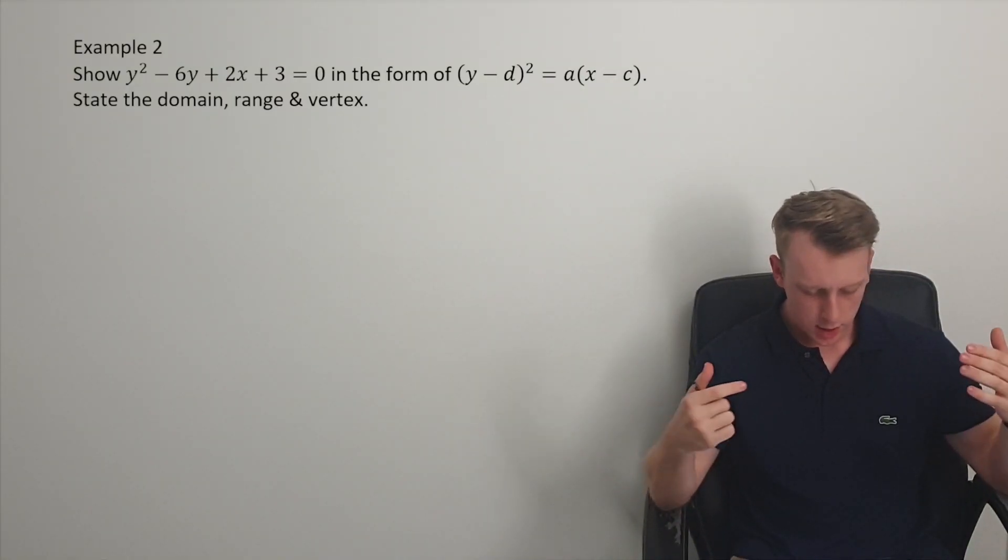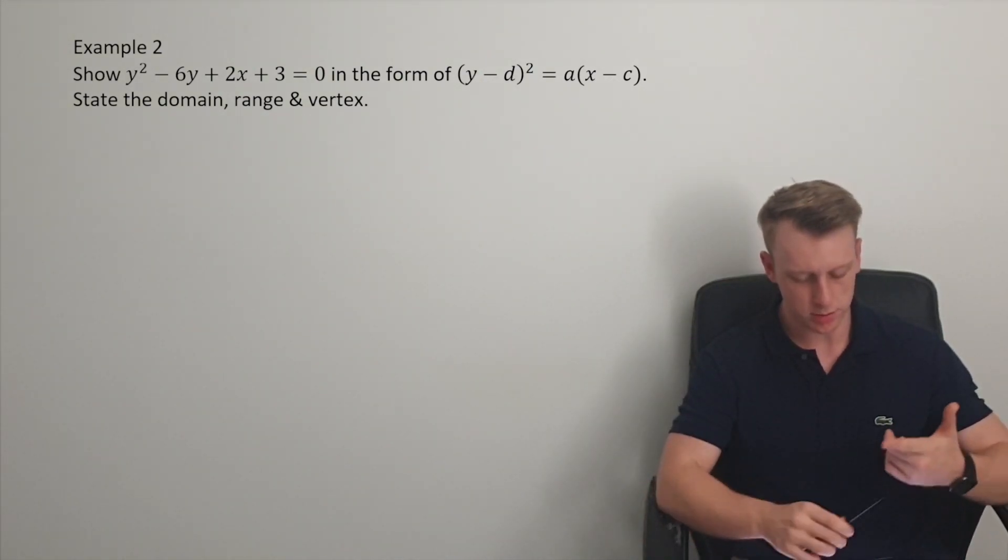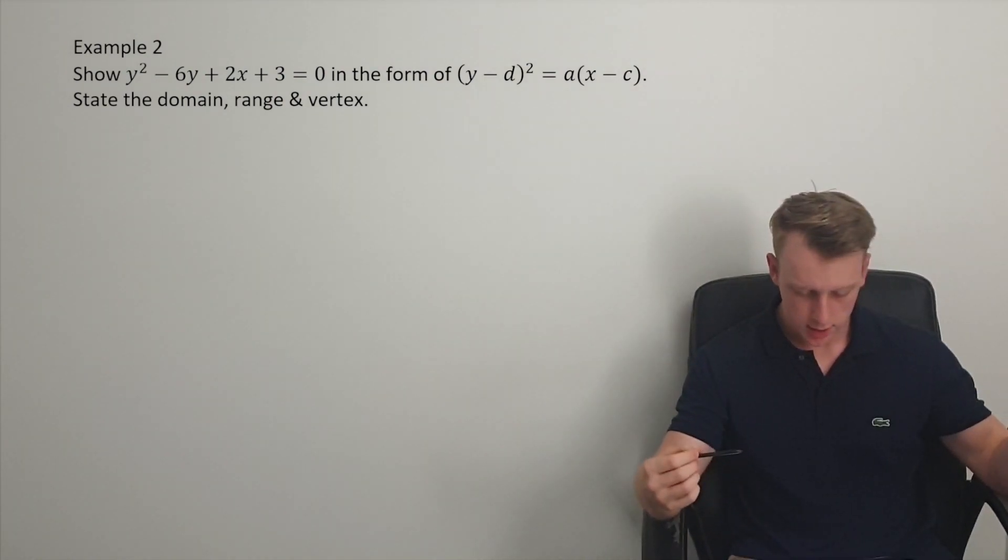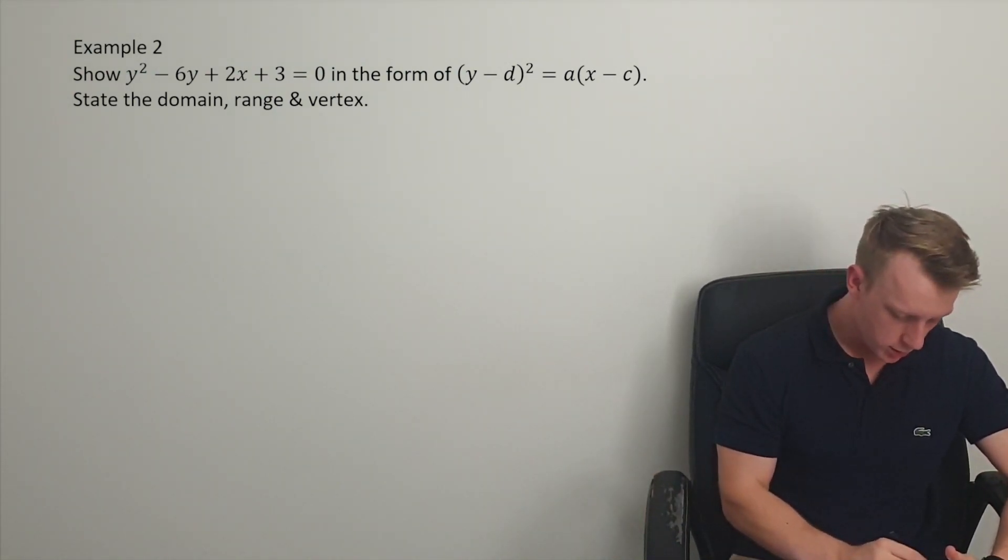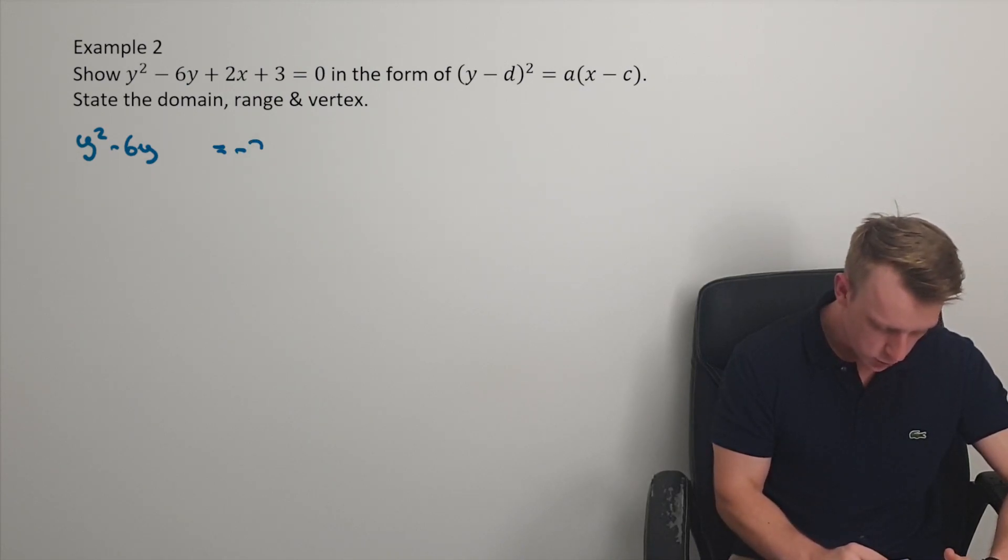This one's here. Show that y squared minus 6y plus 2x plus 3 is equal to 0. Put it, show that thing in the form. So in its general form, and then state the domain, range and the vertex. In order to do this, we need to be able to complete the square. So I'm just going to take y squared minus 6y, and I'm going to ping all this stuff over onto the other side, equal to negative 2x minus 3.